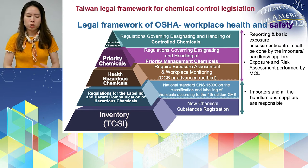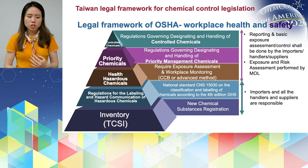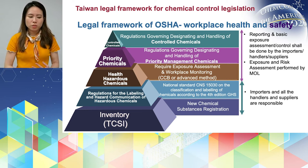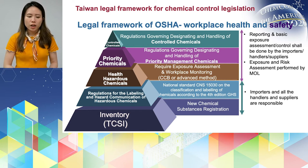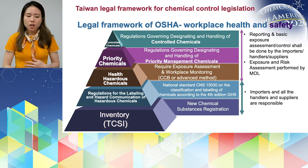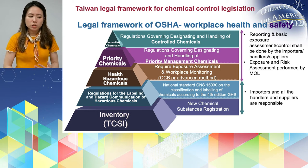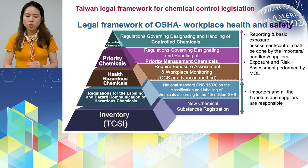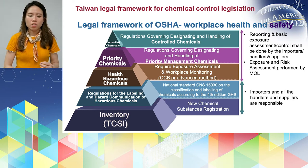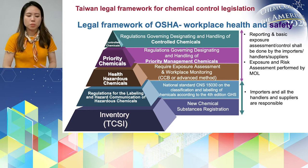Employers should be responsible for these upper-tier measures. For the upper part of the pyramid structure, OSHA basically requires reporting and basic exposure assessment and control — all to be done by importers, handlers, or suppliers. For priority chemicals, industry reports their data to the authority, who uses it to decide what substances need to be designated on the control chemicals list. The stage of exposure and risk assessment is performed by the Ministry of Labour.